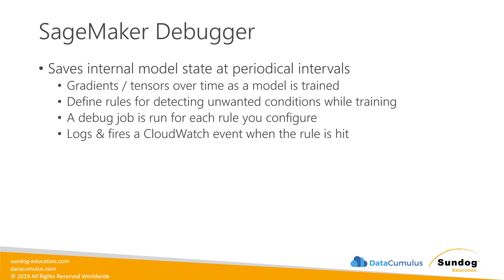You can also define rules for detecting unwanted conditions while training is happening. So you can say, if this gradient goes greater than this value or this tensor does something unusual, flag that and fire off an event to tell you immediately. For every rule that you configure, a debug job will be run. If that rule is triggered, it will log it and fire a CloudWatch event, allowing you to do anything you want in response. SageMaker Debugger is a very useful debugging tool for figuring out what's happening during training and digging into problems that might be arising.